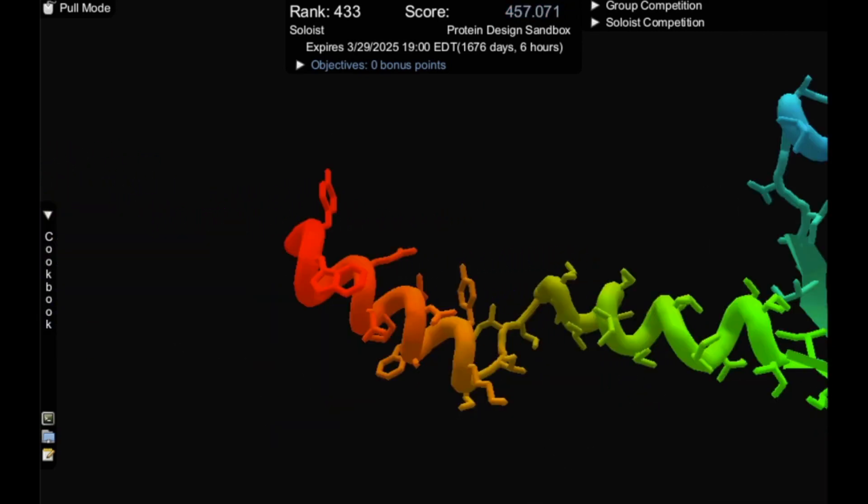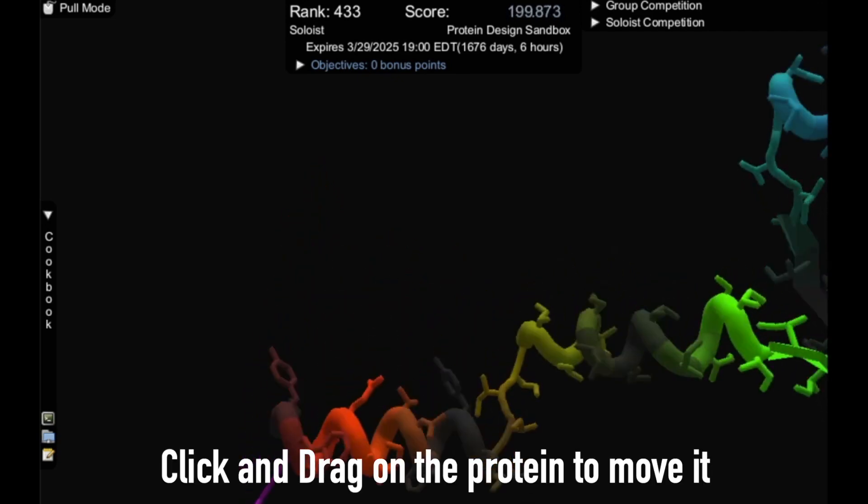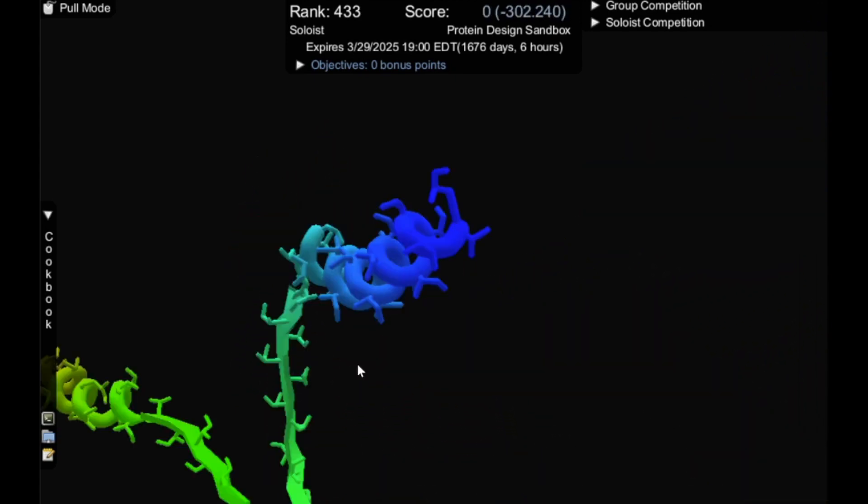Now that we know how to move our camera, let's move our protein around. The first level shows you to pull the protein by clicking and dragging, but how do we actually get it to where we want it to go? The secret is that all of your movements are perpendicular to the plane of the camera.